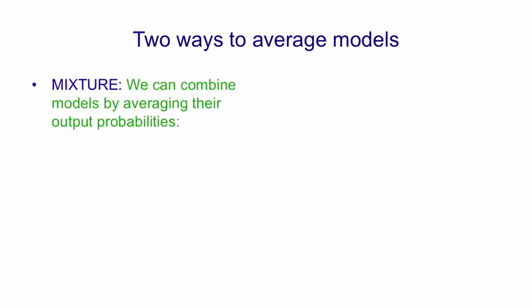I want to start by describing two different ways of combining the outputs of multiple models. In a mixture, we combine models by averaging their output probabilities. So if model A assigns probabilities of 0.3, 0.2, and 0.5 to three different answers, and model B assigns probabilities of 0.1, 0.8, and 0.1, the combined model simply assigns the averages of those probabilities.